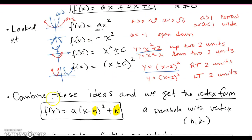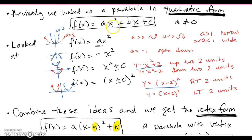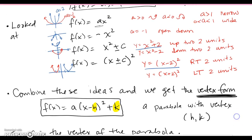Now if we combine these ideas together, we get the vertex form of a parabola: f(x) = a(x - h)² + k, where h and k are the vertex of the parabola. Recall before we would do -b/(2a) to find the x-coordinate of the vertex. But if we have this friendly version already in vertex form, we can pull out the vertex very quickly as h and k. Note that k keeps the same sign as written, but h will be the opposite sign of what's inside.